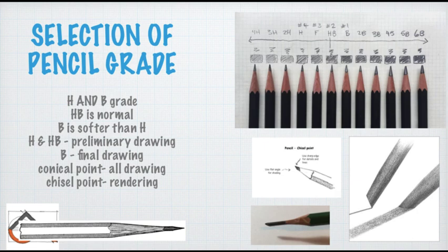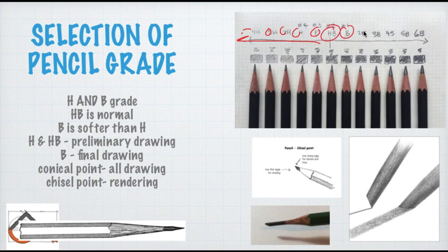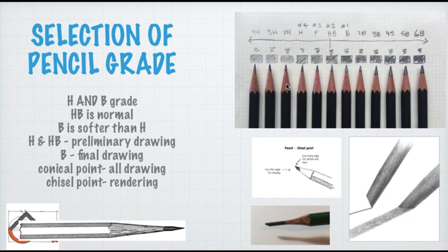First, let's discuss the selection of pencil grade. Pencils can be divided into three parts: H pencils (1H, 2H, 3H, 4H), HB which is considered a normal pencil, and B-grade pencils (B, 2B, 3B, 4B). There are many different pencils and shades you can choose from.